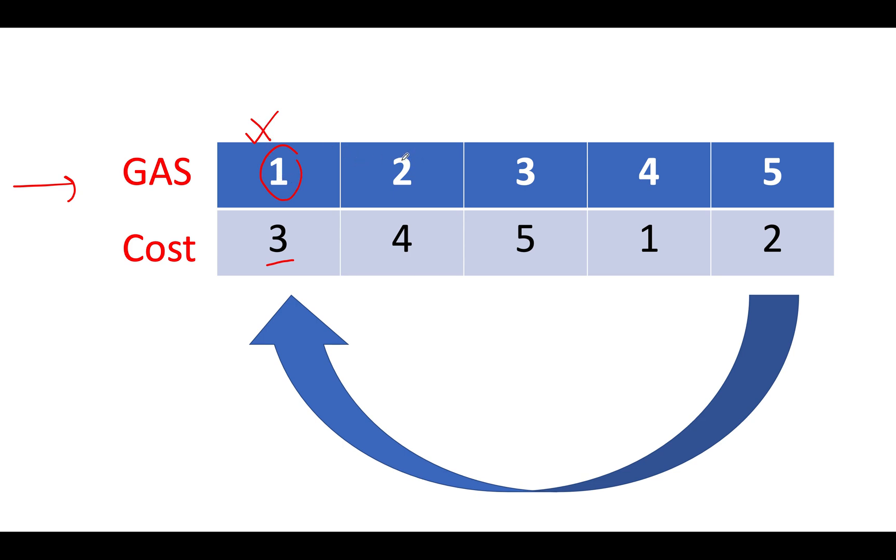Let's move ahead and calculate the difference between these two. How much gas do we have? Gas starting value is 2 units and the cost for moving on to the next station is also 4 units. So if I subtract gas minus cost, then what do I get? I get minus 2. Since the value is negative in nature, it's not possible for us to start the journey from this particular location.